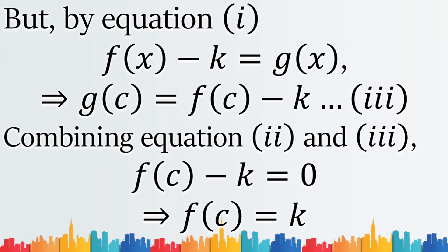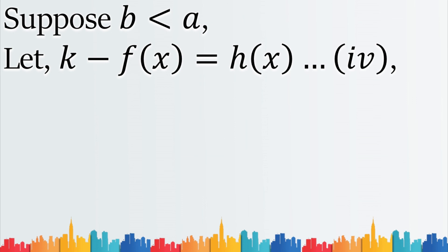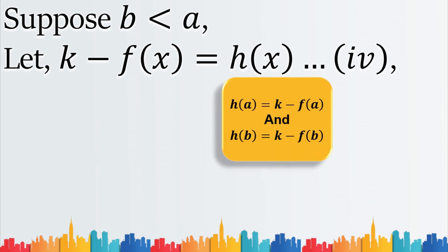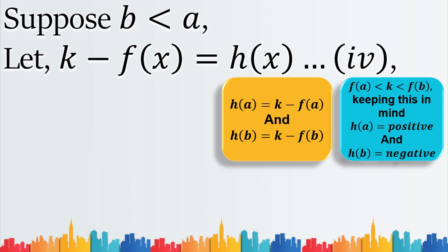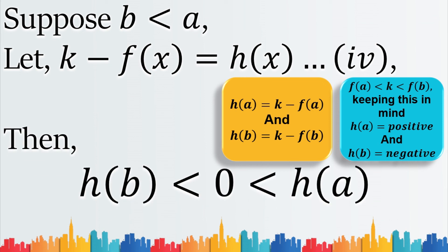But the proof is not finished yet — we must examine the other case where a is greater than B. Now we suppose B is less than a, and we define a new function H(x) equal to K minus F(x). We can see that H(a) equals K minus F(a) and H(b) equals K minus F(b). By keeping in mind that F(a) is less than K which is less than F(b), we can see that H(a) is positive and H(b) is negative.